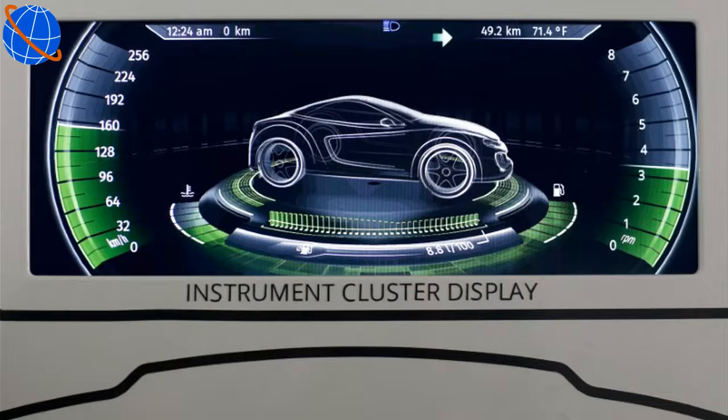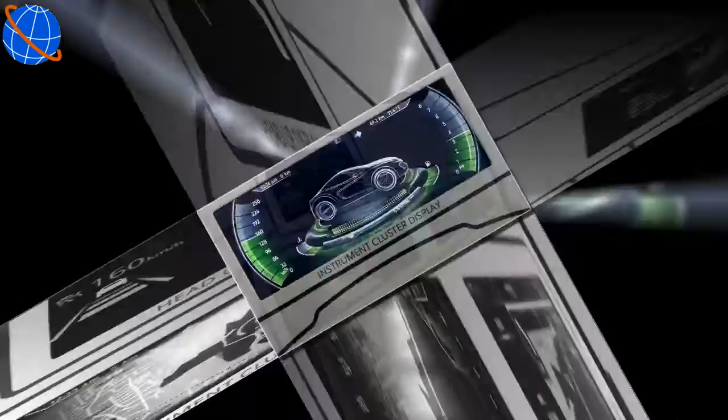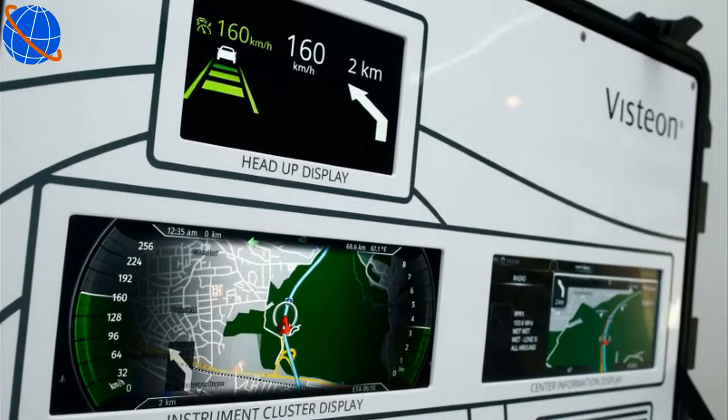One of Vistian's solutions is a computer module dubbed SmartCore. This cockpit domain controller operates a vehicle's instrument cluster, infotainment system and other features, all on the same tiny piece of silicon.